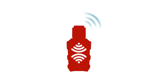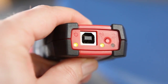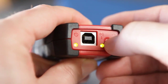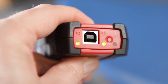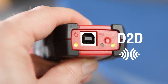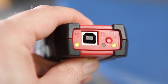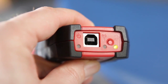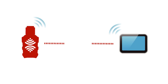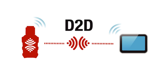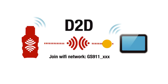D2D mode, otherwise known as device-to-device mode, turns your GS911 Wi-Fi into a soft access point. That means you can connect directly to it via Wi-Fi with your browsing device, which is usually anything with a browser and Wi-Fi capability.